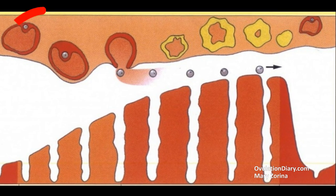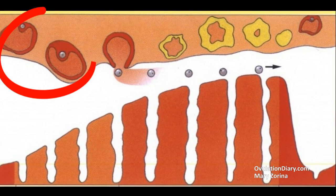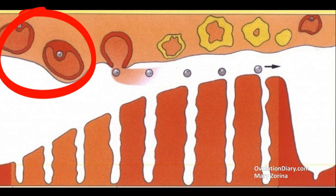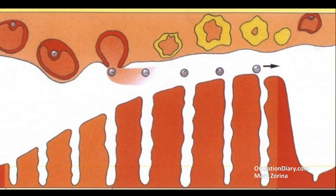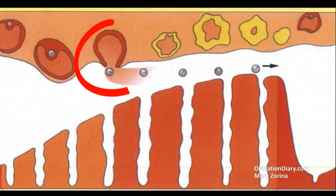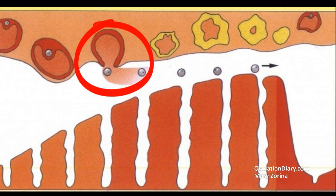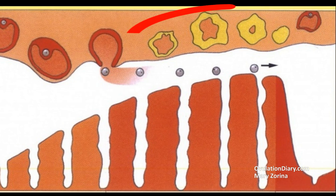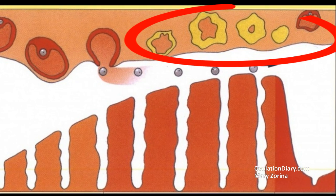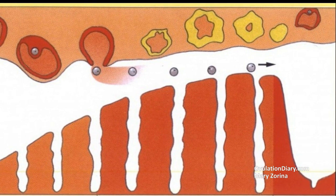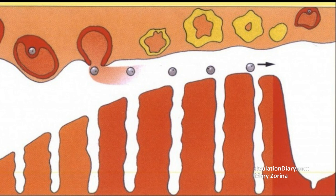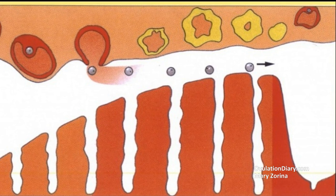1. The growth phase of the follicle, which contains the egg. 2. Ovulation. 3. The phase of the yellow hormone-secreting body, which is formed after the rupture of the follicle and the egg release.